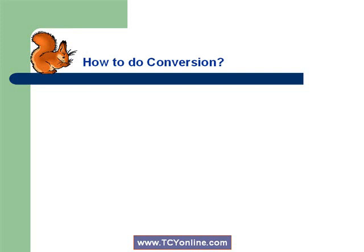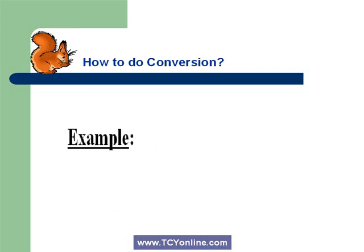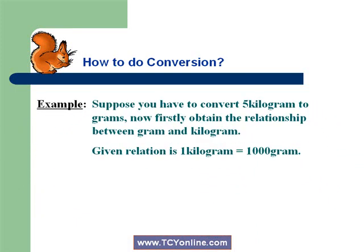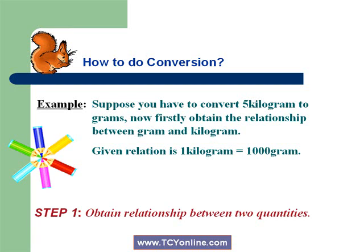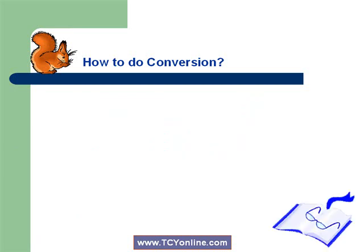Now let's learn how to do conversion. For this, let's take an example. Suppose you have to convert 5 kilograms to grams. First, we obtain the relation between grams and kilograms. We are aware that 1 kilogram equals 1000 grams. Now we will construct a fraction equal to 1 by writing the equation with the desired unit on top and the given unit on bottom.